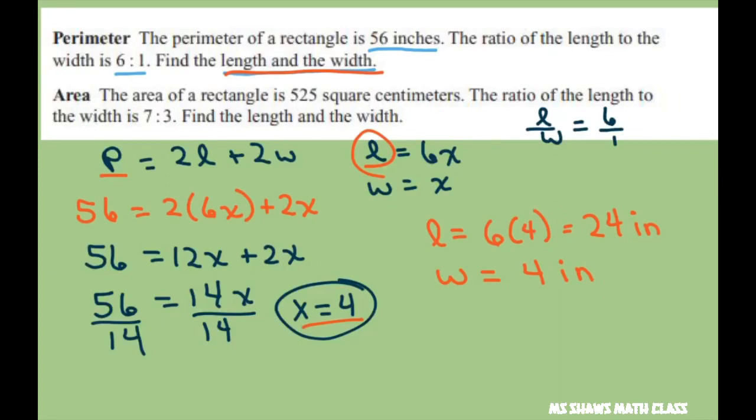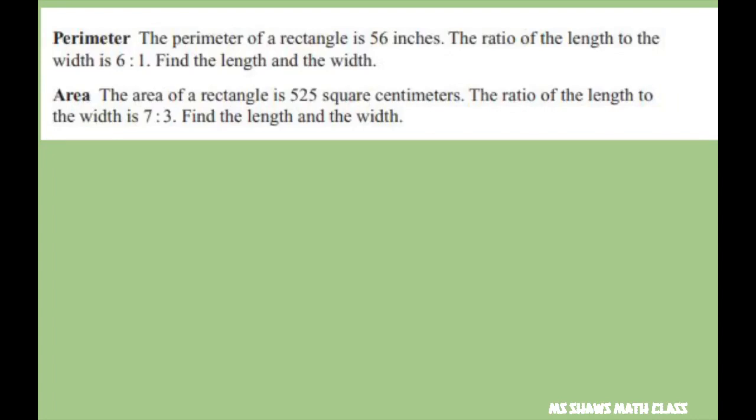And then we have to do the area. So let's do that one. The area of a rectangle is length times width. The ratio of length to width is 7 to 3.